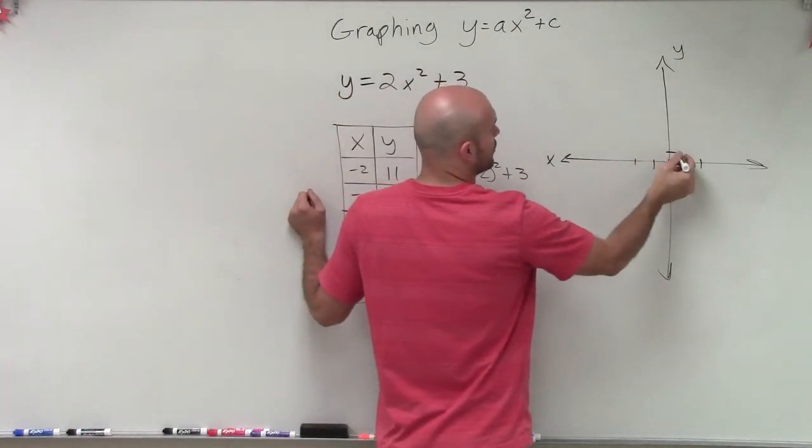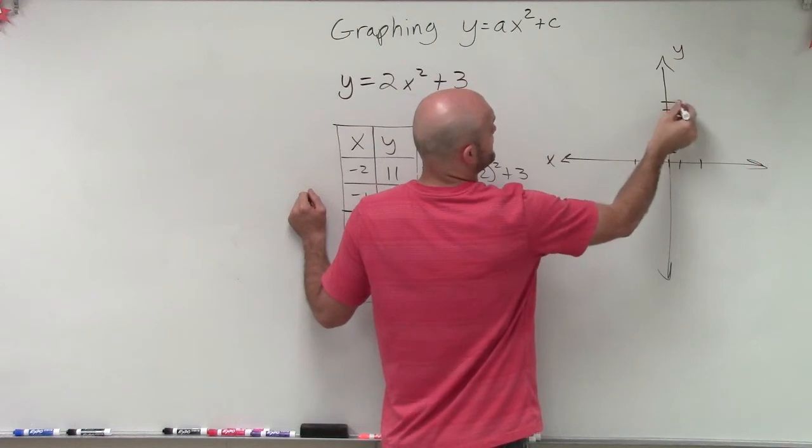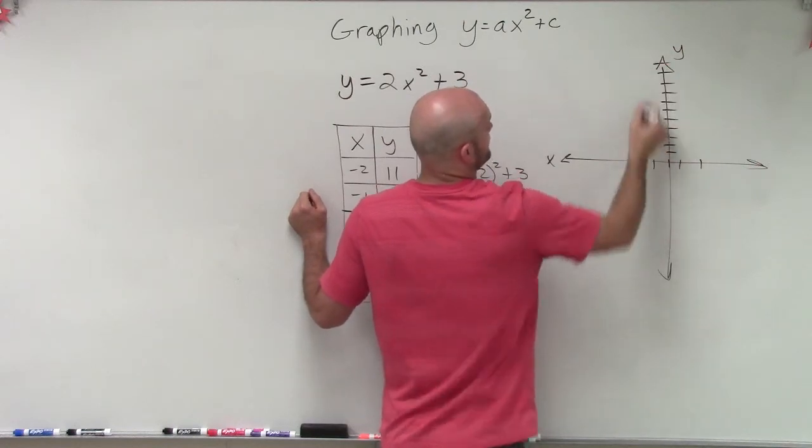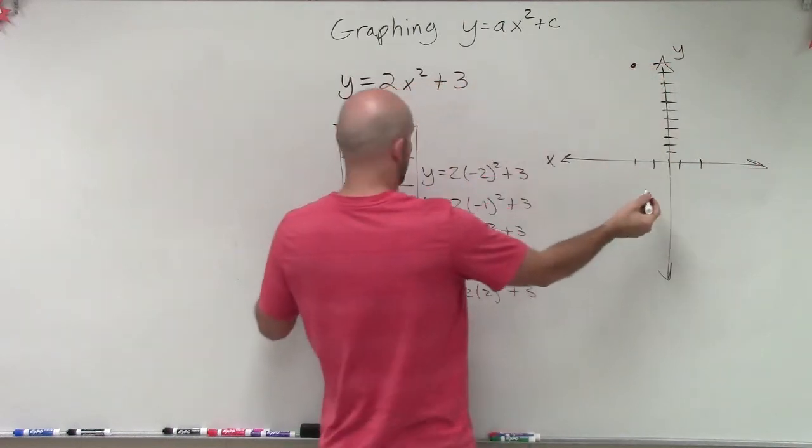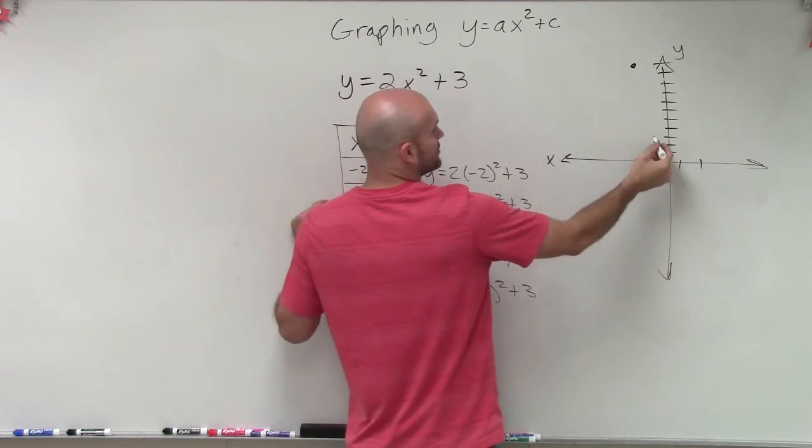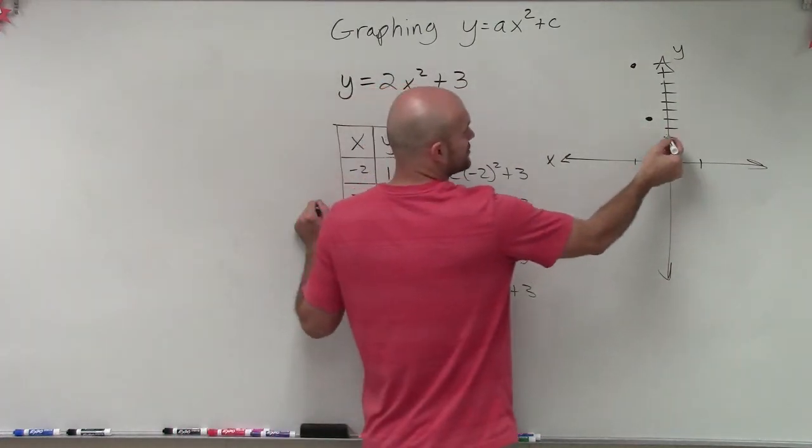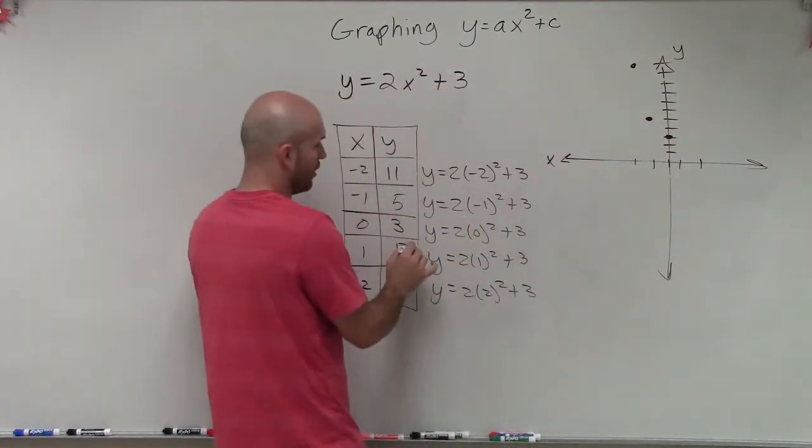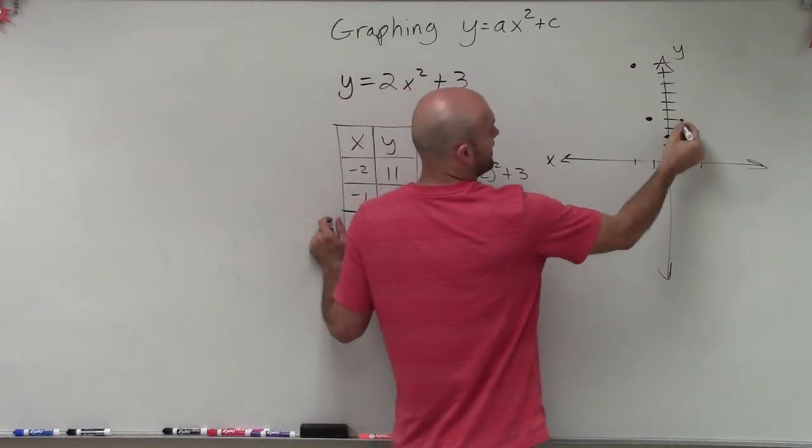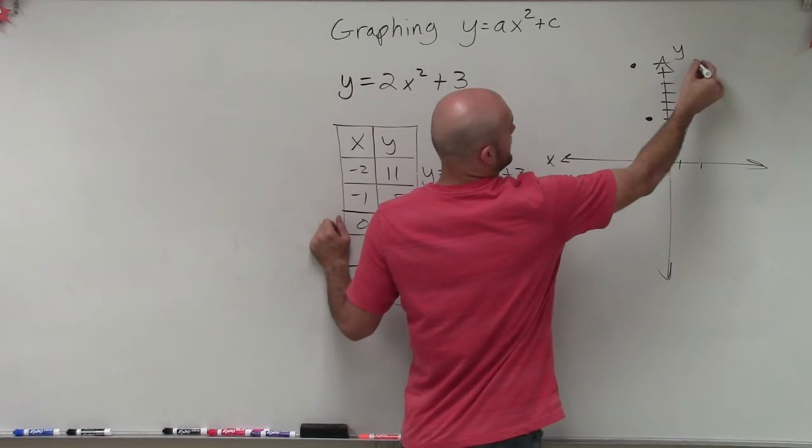So if I go over negative 2, I need to go up 11. So 1, 2, 3, 4, 5, 6, 7, 8, 9, 10, 11. Then I have negative 1, 5. 1, 2, 3, 4, 5. Then I have 0, 3. 1, 2, 3. Then I have 1, 5. 1, up 5. And then 2, 11 again.